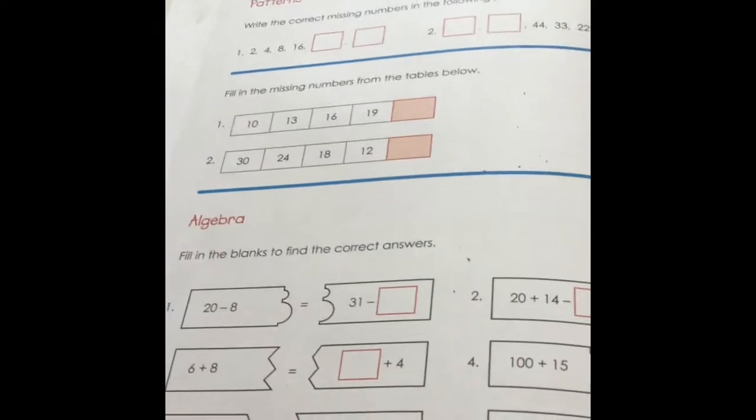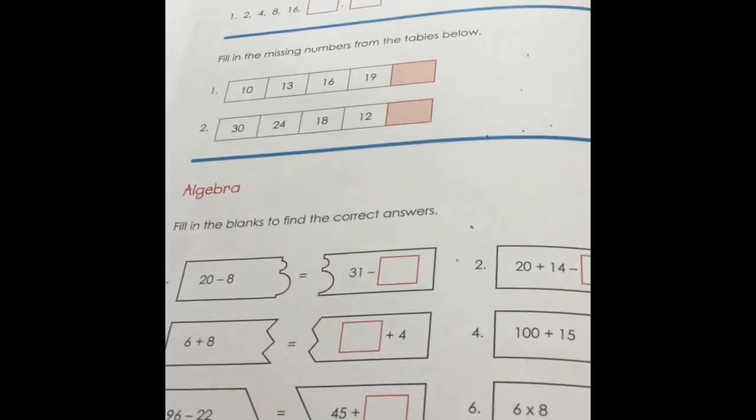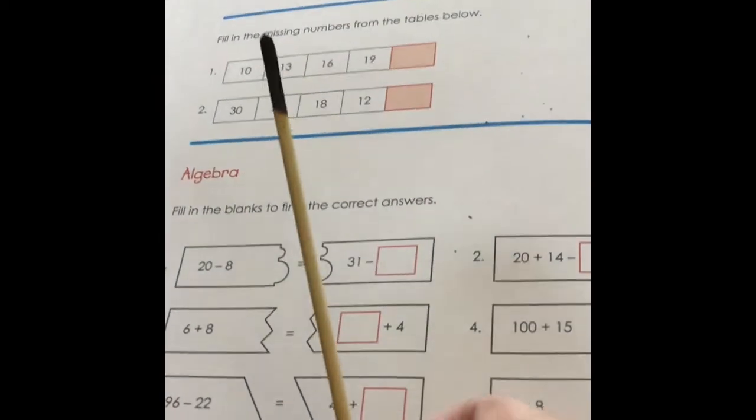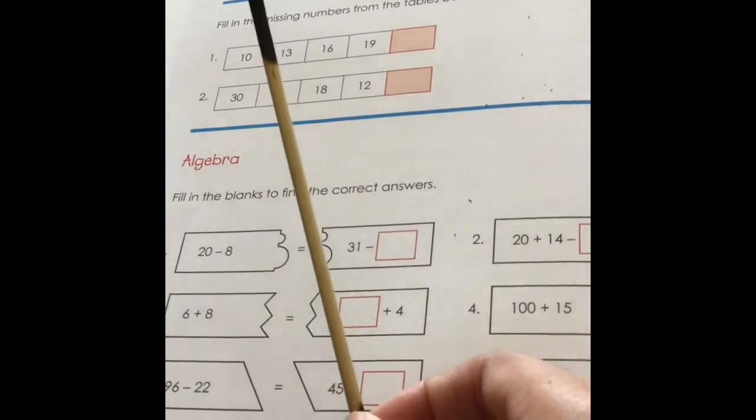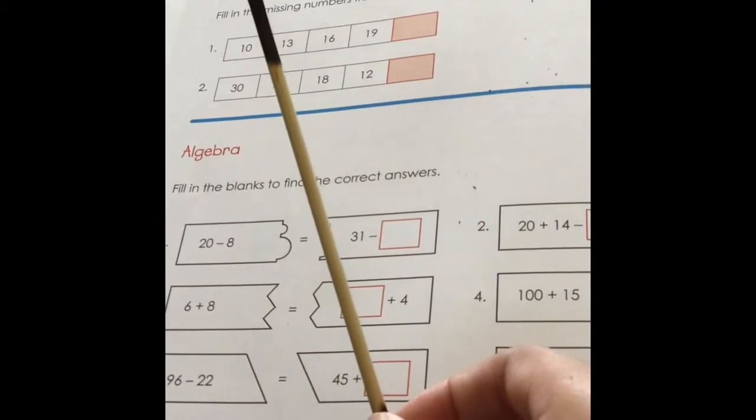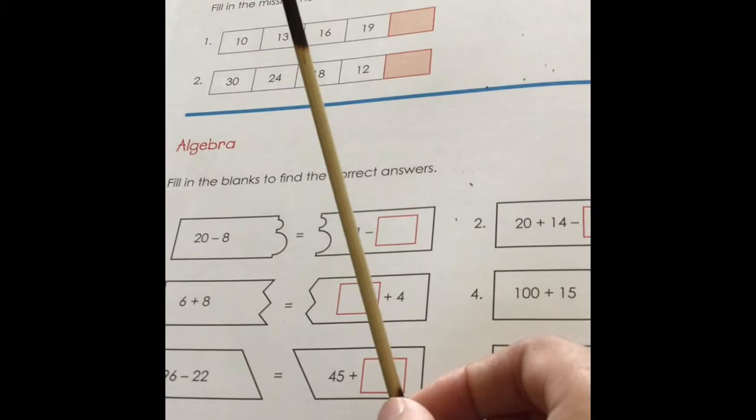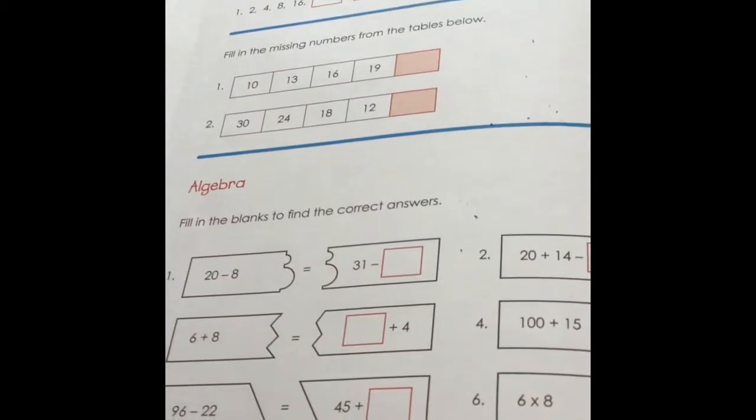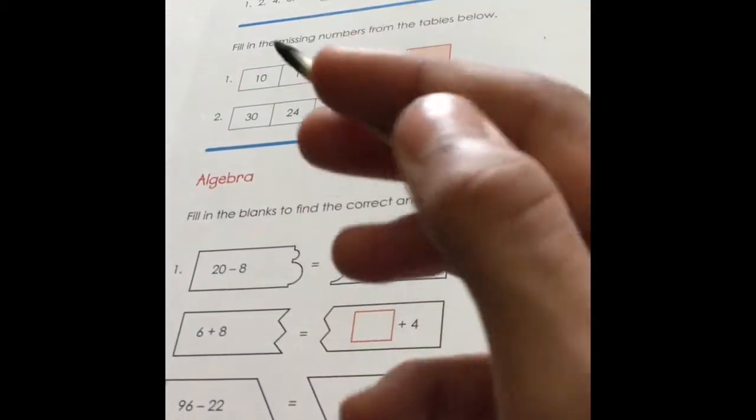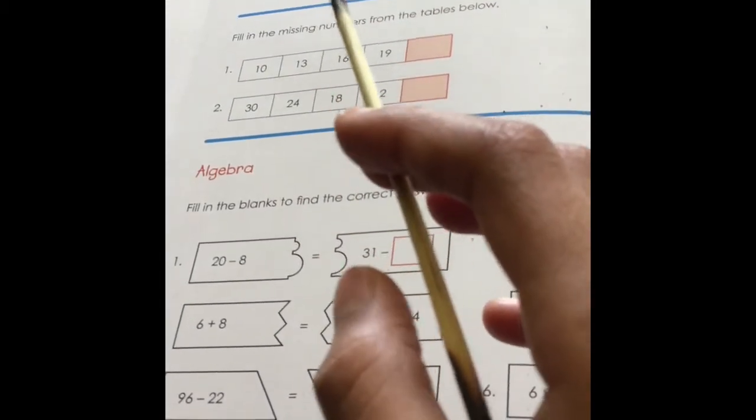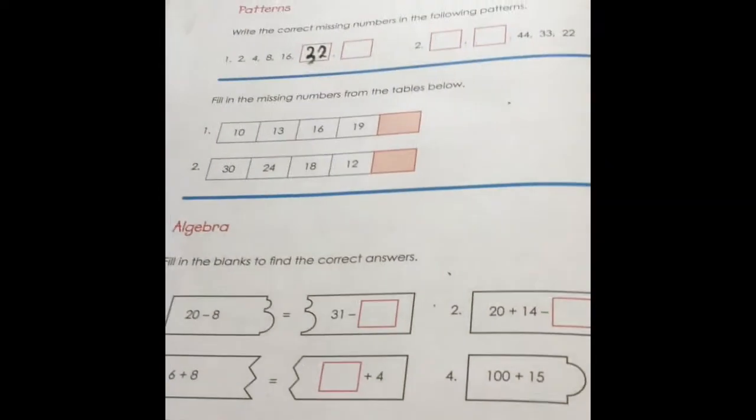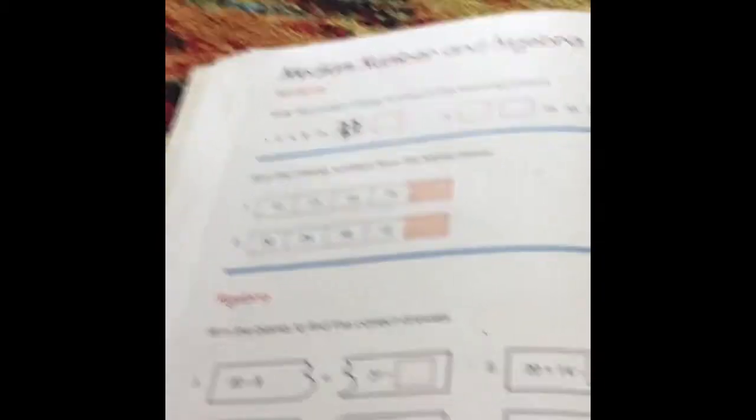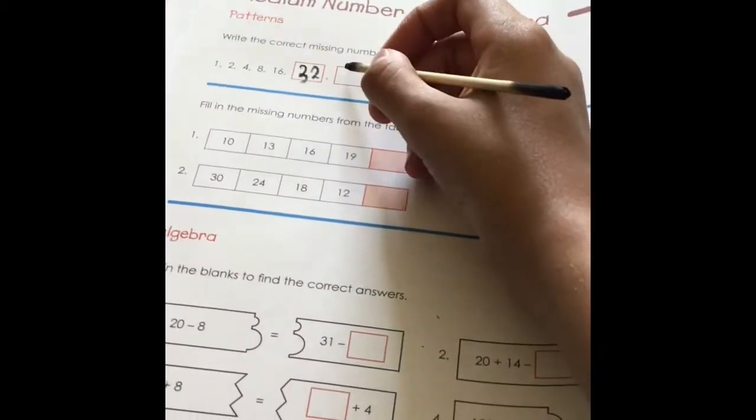Patterns. Write the correct missing numbers. 2 times 2 equals 4, but 4 times 2 also equals 8. 8 times 2 equals 16, or you could also say it's a doubling pattern. 16 plus 16 equals 32. Now 32 plus 32 should equal 64.